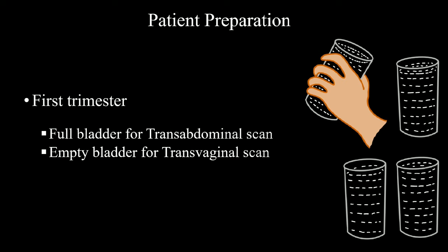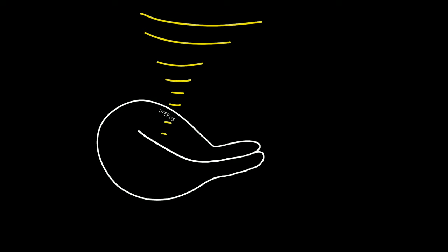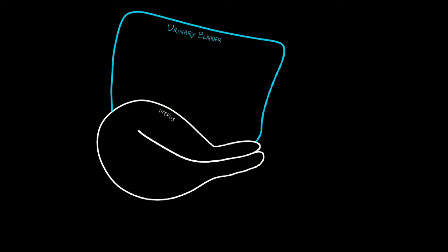For first trimester transabdominal ultrasound scan, the patient should come with a full bladder. If you do TVS, then the bladder needs to be empty. As this lecture is the basic one, I want to focus mainly on the transabdominal scan. Why do we need a full bladder? The uterus is a deeper organ. Sound waves can't reach that deep well. Reflected sounds from the uterus also can't reach the transducer. So we can't see the uterus well. We need an acoustic window, which is the fluid-filled urinary bladder.